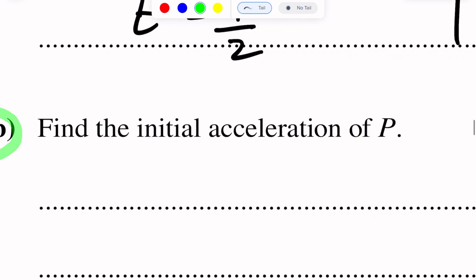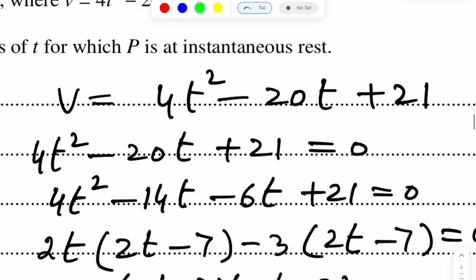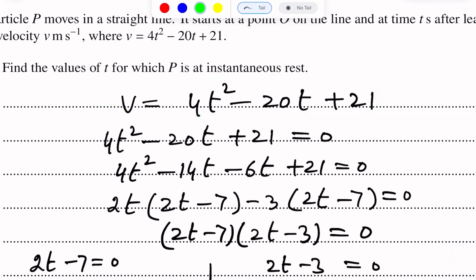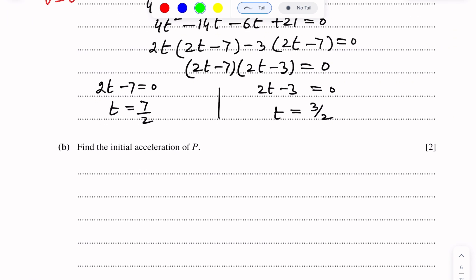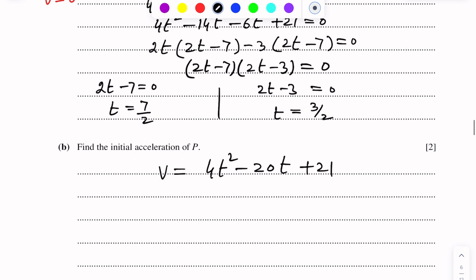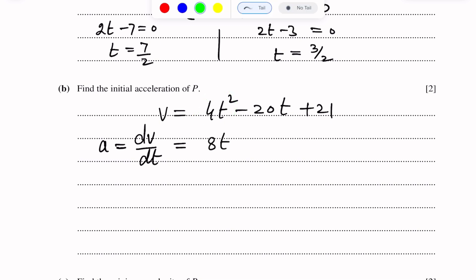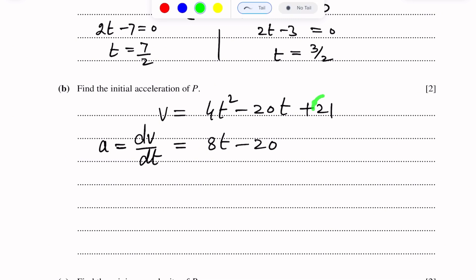Part B of this question asks us to find the initial acceleration of P. Since the velocity-time relation is given, we differentiate v with respect to t to get acceleration. With v = 4t² − 20t + 21, differentiating gives dv/dt = a = 8t − 20, since the derivative of 4t² is 8t, of 20t is 20, and of the constant 21 is 0.